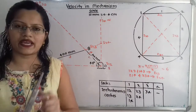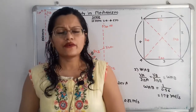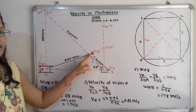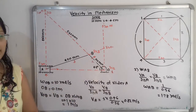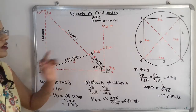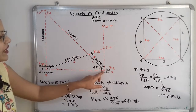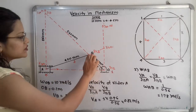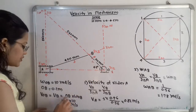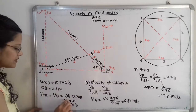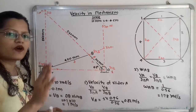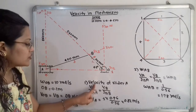Now we move to the calculation part. The angular velocity of crank OB is given as ω_OB = 10 rad/s and OB = 100 mm = 0.1 m. The velocity at point B is V_B = OB × ω_OB = 0.1 × 10 = 1 m/s.